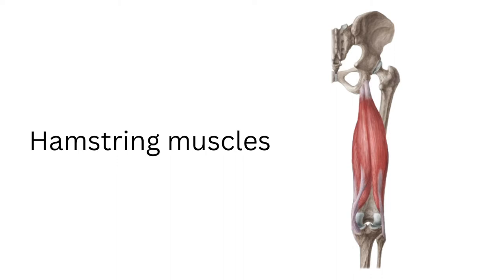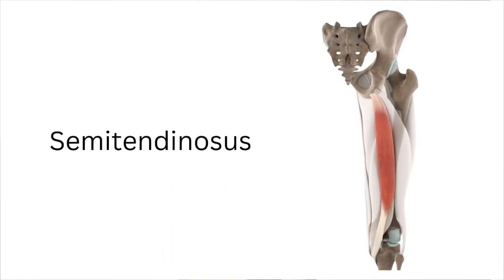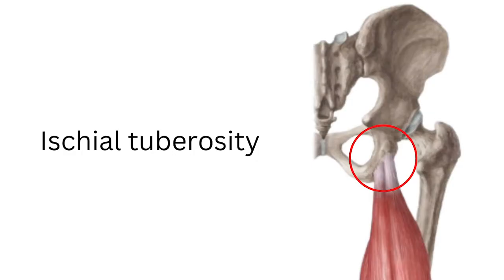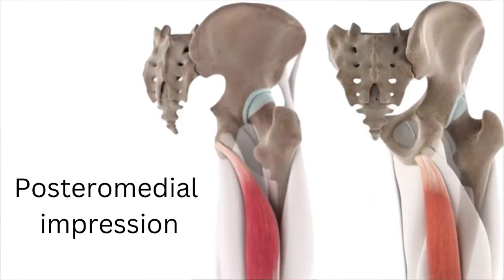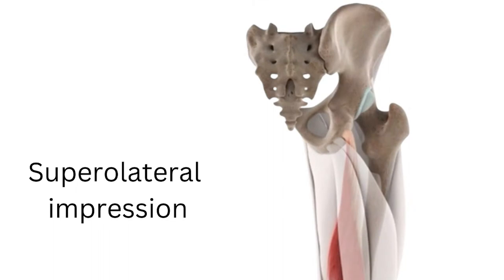Most muscles are connected to bone by tendons. A lot of people think the hamstring is one muscle — it's actually three muscles. We have the semimembranosus, the semitendinosus, and the biceps femoris. All three hamstring muscles originate from the same spot on the pelvis called the ischial tuberosity, which is the sit bone. The biceps femoris and the semitendinosus share a conjoined tendon that originates from the medial portion of the ischial tuberosity, whereas the semimembranosus has its own tendon that originates from the lateral portion. So there are two hamstring tendons that connect the three hamstring muscles to the pelvis.